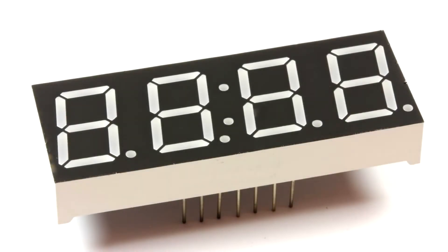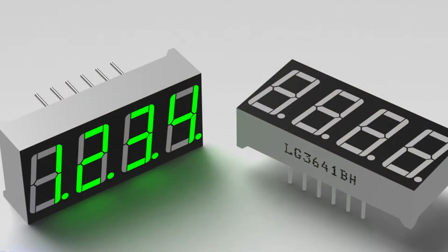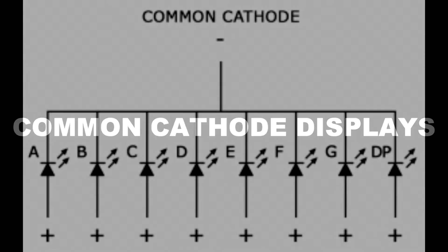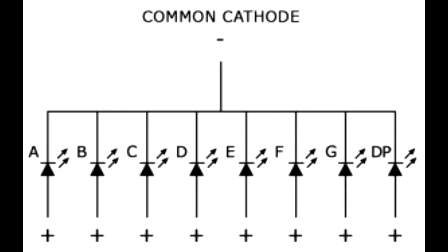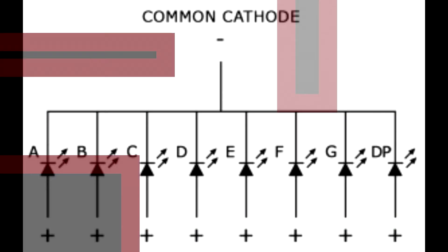Let's start to set up the circuit. In this project I am using a 4-digit 7-segment common cathode display. There are two types of 7-segment displays available: common cathode and common anode. In common cathode displays, all of the cathodes are connected to ground, and individual segments are turned on and off by switching power to the anodes.